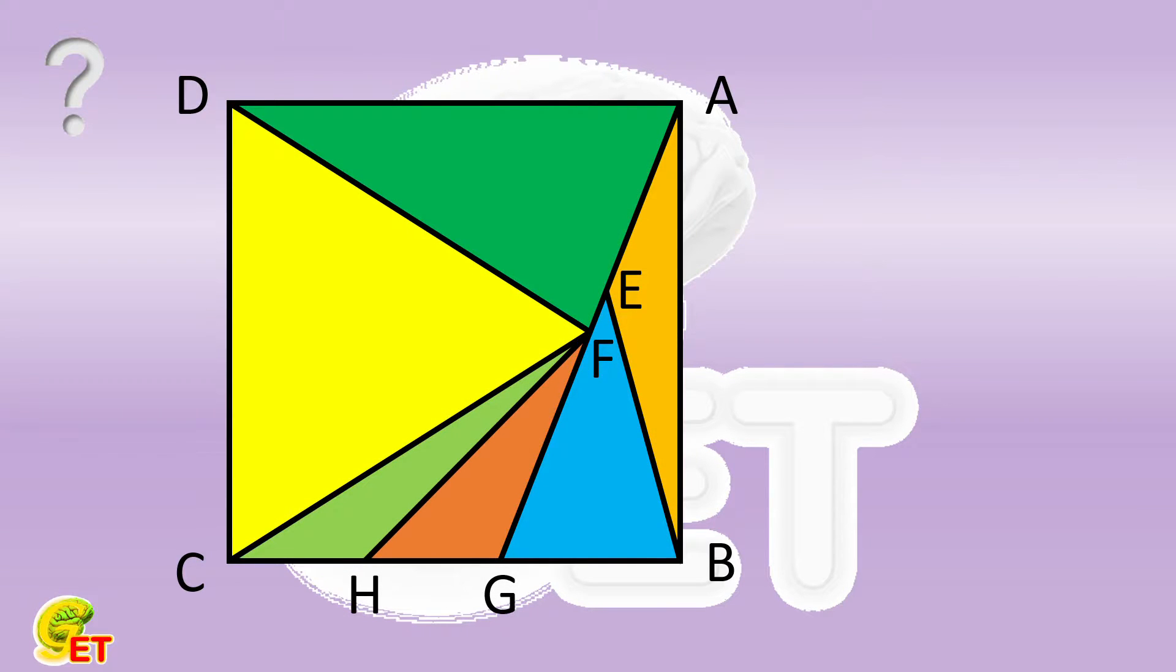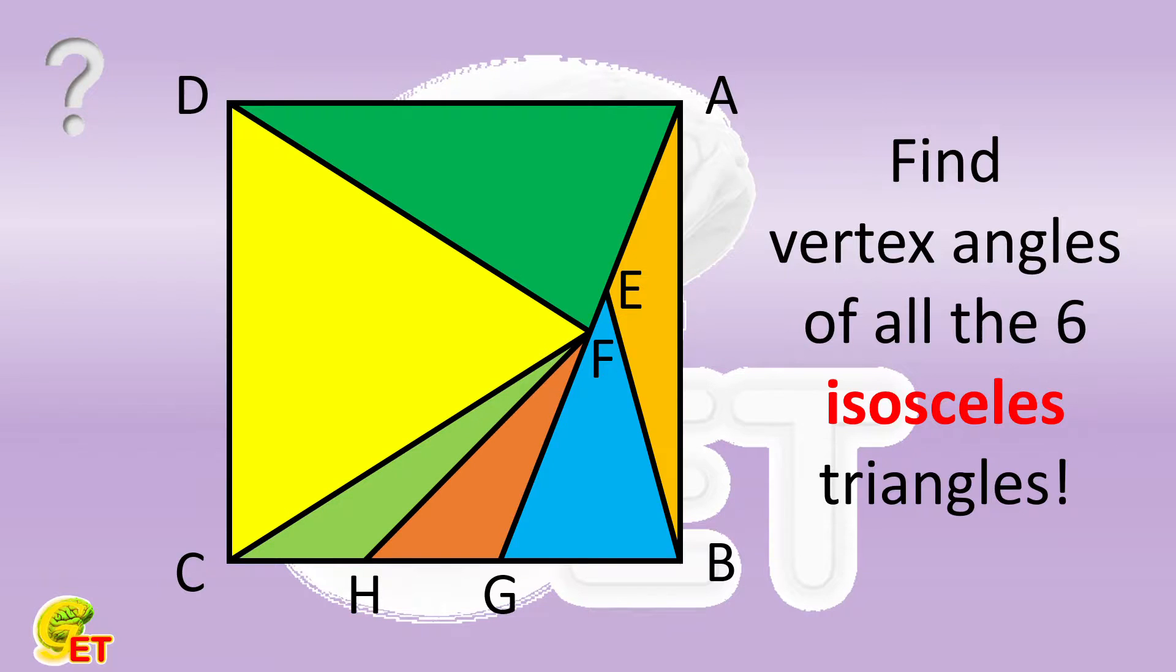The scale in the schematic diagram doesn't show the real values, but it is certain that AEFG are on the same straight line, and BGHC are on the same straight line. Then, how big is each vertex angle of these six isosceles triangles?